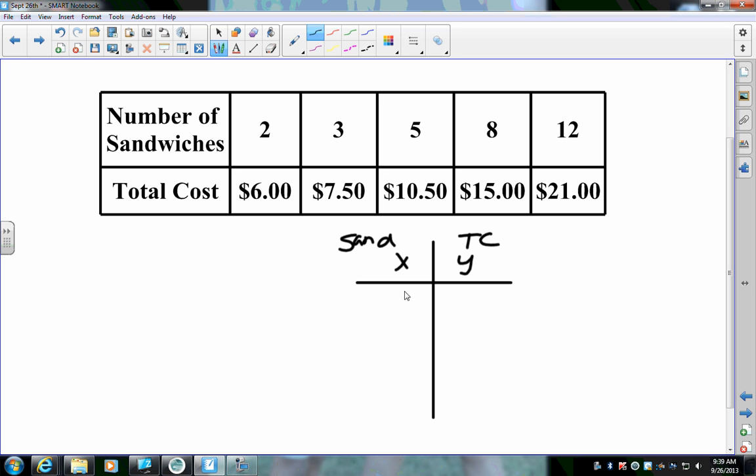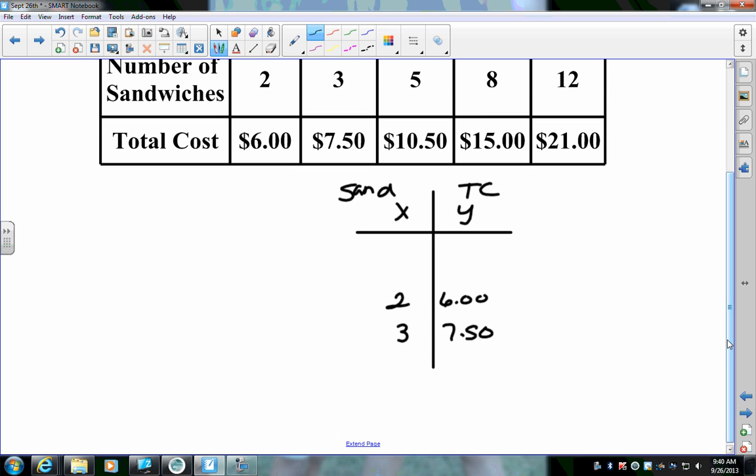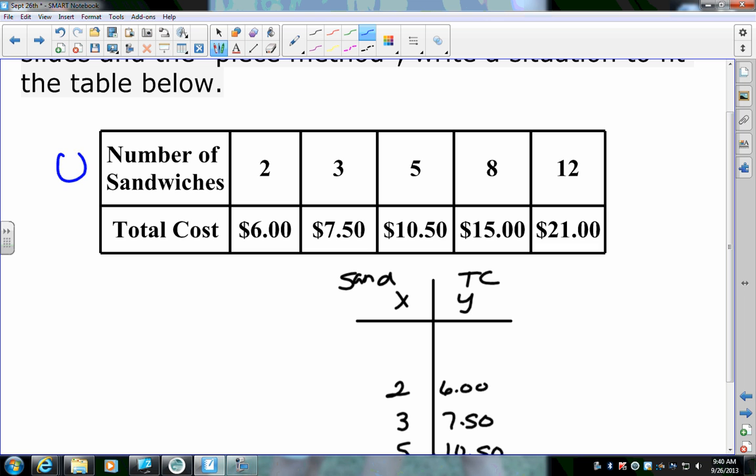Now, watch what I'm going to do. Because it doesn't start at 0, I'm going to go down a little bit, and I'm going to put 2 and 6, 3 and 7.50, 5 and 10.50, 8 and 15, 12 and 21. There's a reason why I left myself some space. Now, first off, it doesn't tell me my starting amount. Because your starting amount, the x number has to be 0, and then the y number. So, then the y number is your starting amount. So, we would have to figure that out. But before we can figure that out, we have to figure out our rate of change.